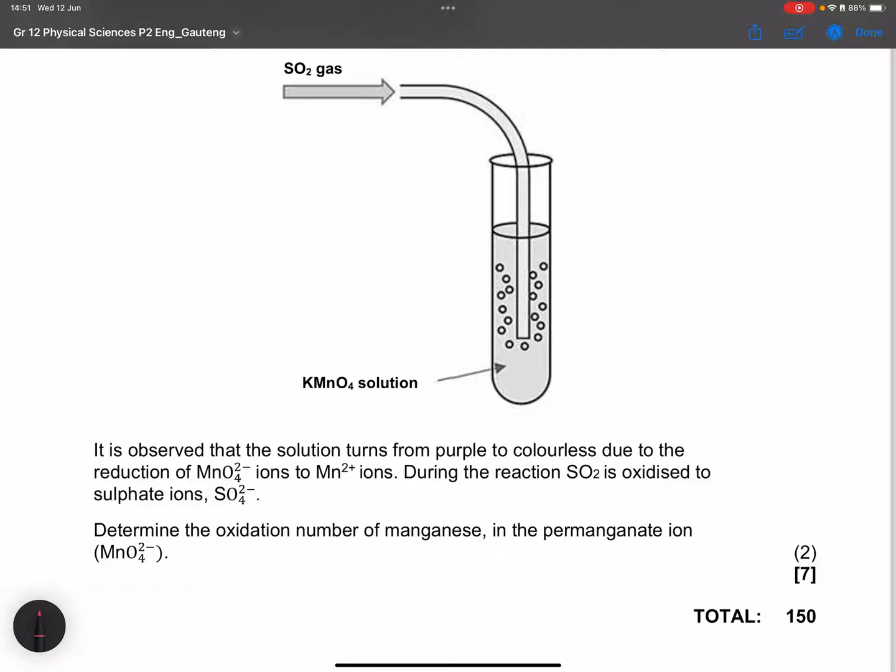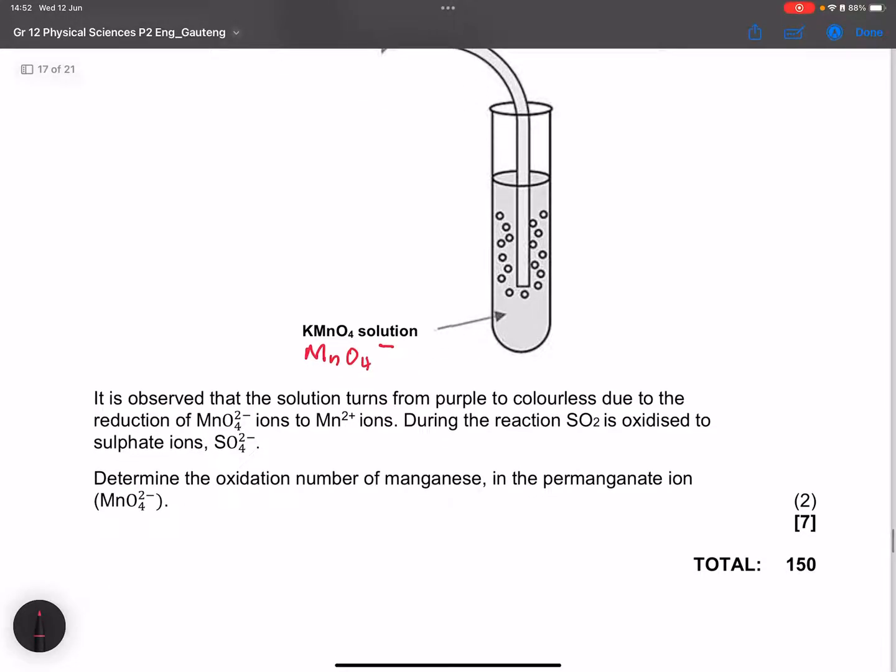So first of all, ladies and gents, that's KMnO4. I'm not sure why they wrote two minus there, because then it would suggest that it is K2 when it actually has, it is with potassium. But remember, the permanganate ion is MnO4 minus. So I want you to please note this very carefully.